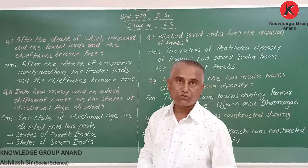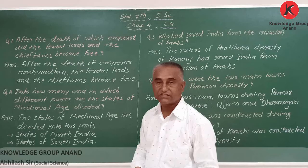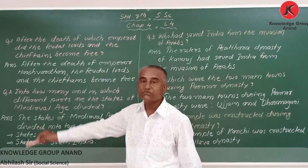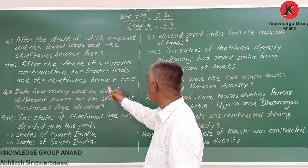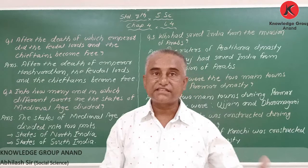Harshavardhana ruled during the 7th century. After the death of Emperor Harshavardhana, the feudal lords and the chief kings became free. And in the south, we know Pulakesi II.